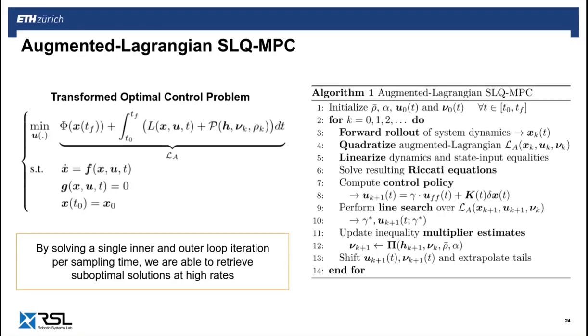It is important to note that in each MPC iteration, the minimization problem is not solved up to convergence. This is because computing suboptimal solutions at high rates results in superior closed-loop performance when compared to optimal solutions computed at low rates. So what we do is that in each MPC call, only a single inner and outer loop iteration is performed before applying our inputs.